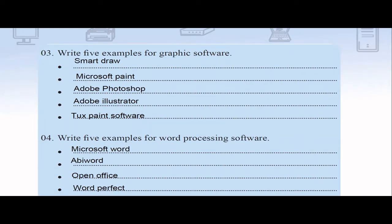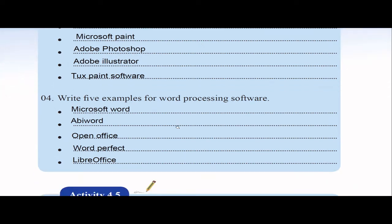Five examples of graphics software: in your book you have Smart Draw and Microsoft Paint. Additional examples include Adobe Photoshop, Adobe Illustrator, and Tux Paint. For word processing software, Microsoft Word is the most popular and is proprietary — you need to pay for the license. Open-source alternatives include LibreOffice and OpenOffice, which you can download and use for free. Other examples include AbiWord and WordPerfect.